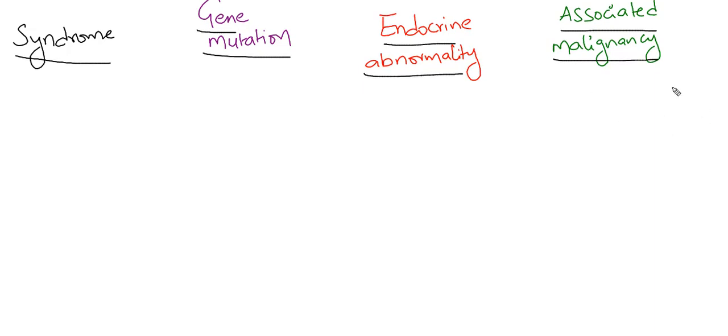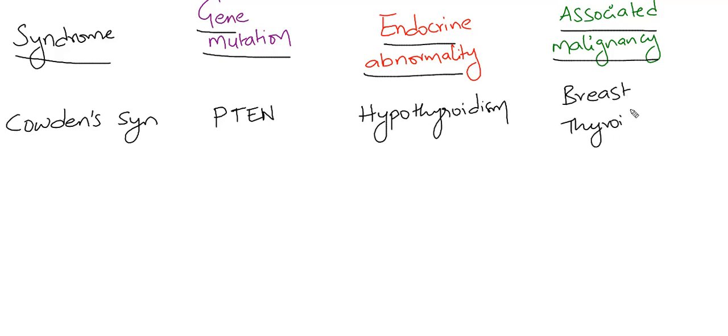Coming to the first one, Cowden's syndrome: the gene mutation here is PTEN. The endocrine abnormality is most commonly hypothyroidism, and associated malignancies are either breast, thyroid, or gastrointestinal polyps.